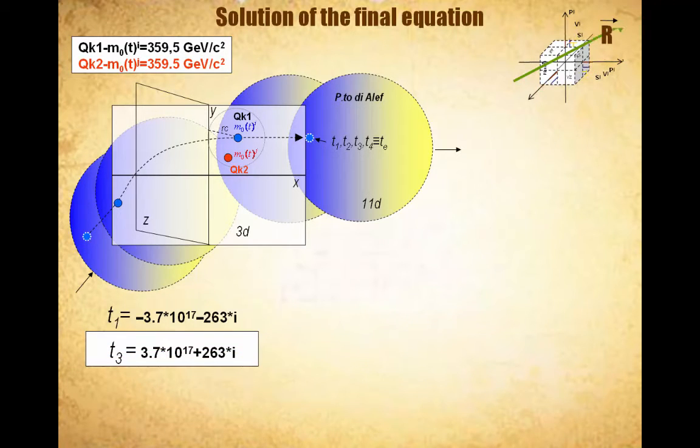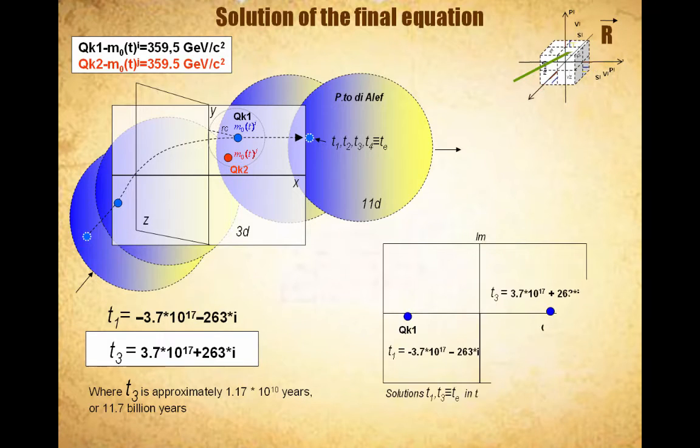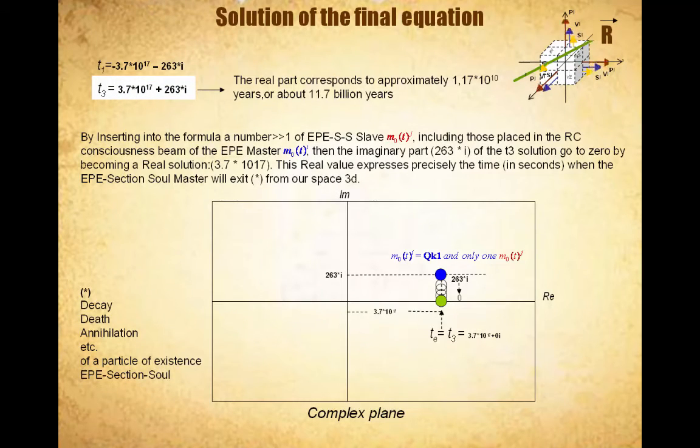Despite having significantly simplified all numerical values at stake and due to the limitation of computational tools available, we get into the complex plane the positive solution T3, whose imaginary part tends to zero when the particles present in the consciousness of the quark 1 are all considered, by inserting into the formula a larger number of EPI section soul's MJ of type slave. Then the imaginary part of T3 solution tends to zero by becoming real.